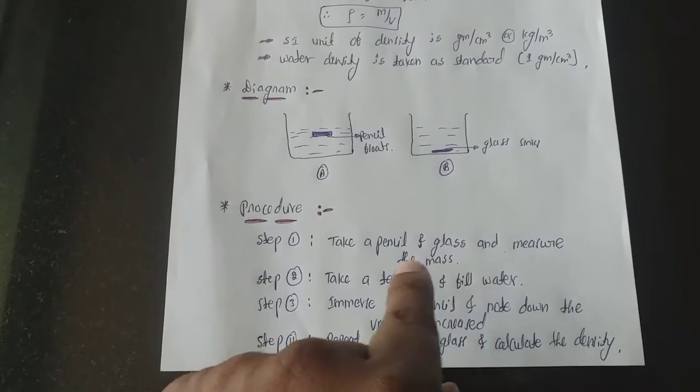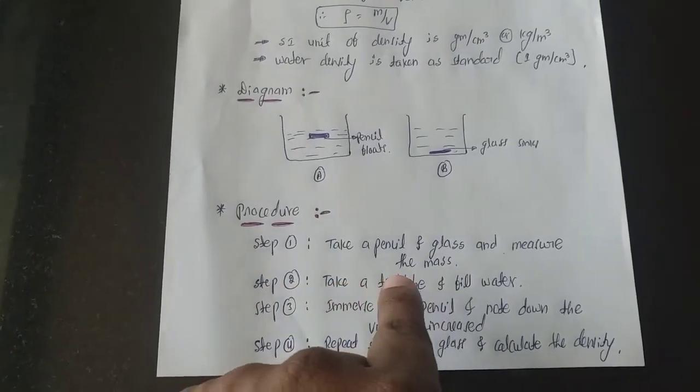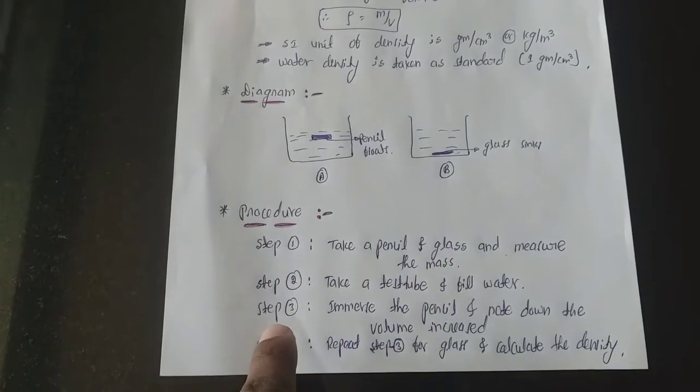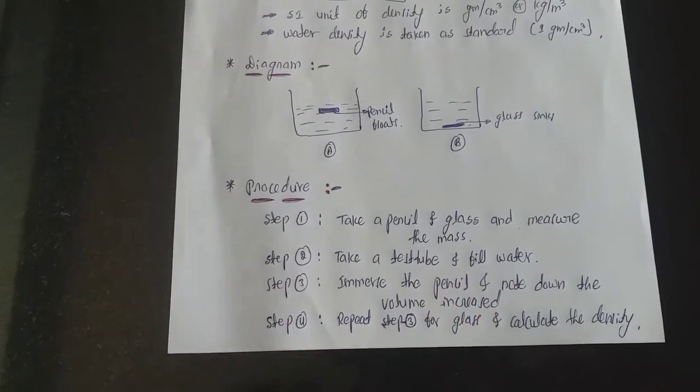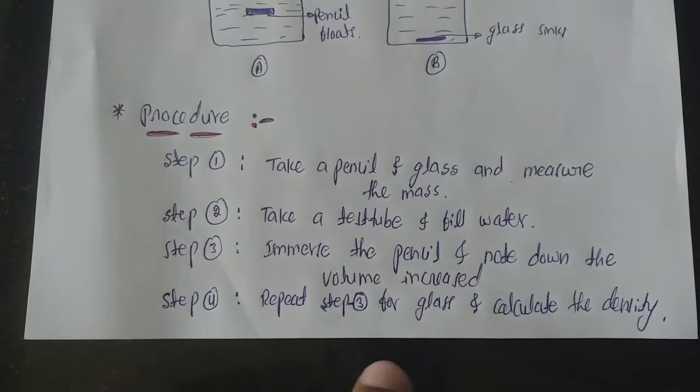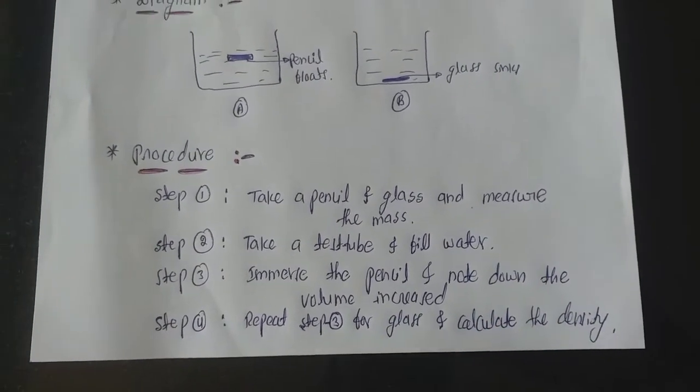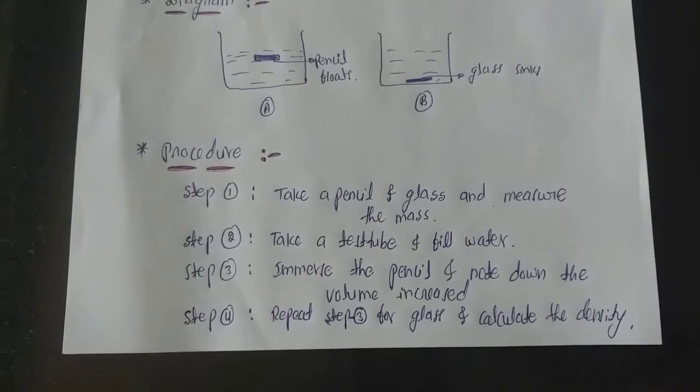Step 3: immerse the pencil and note down the volume increased. Then step 4: repeat step 3 for glass and calculate the density of both pencil and glass.